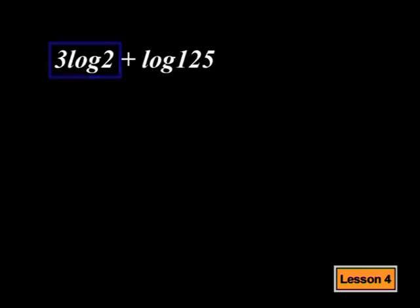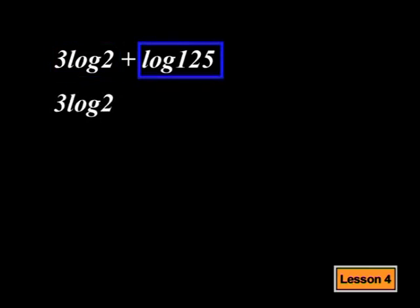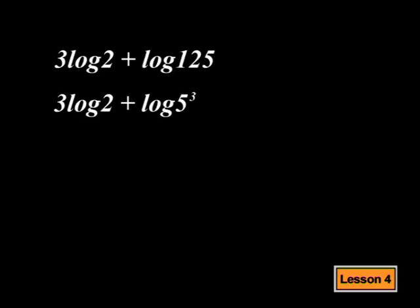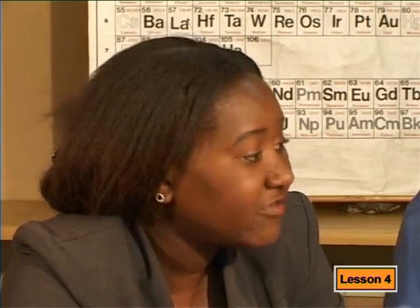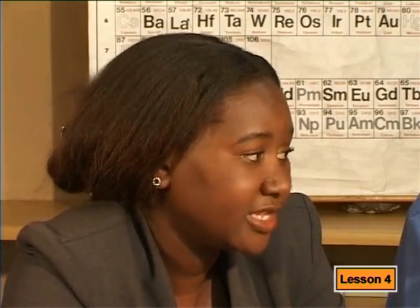In this example, the first log already has a number with a prime base of 2. This second log, though, has the number 125, which isn't prime. We can, however, rewrite it as 5 to the power 3. Next, we need to check that the logs have like bases, which in this case, they do. Even though it isn't written, both logs have a base 10.